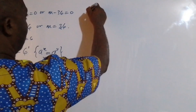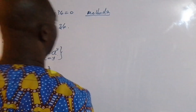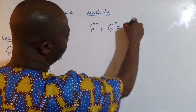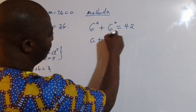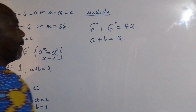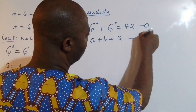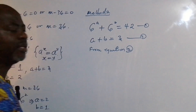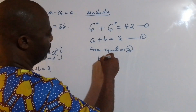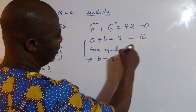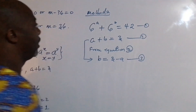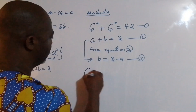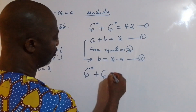Let's look at method two. For method two we still have the same set of equations. What I'm going to do is start with equation two. From equation two I'm going to make b the subject of the formula, so equation two becomes b = 3 − a — I'll call this equation three. Then I'll substitute for b in equation one.